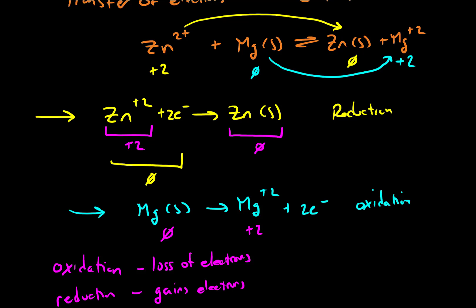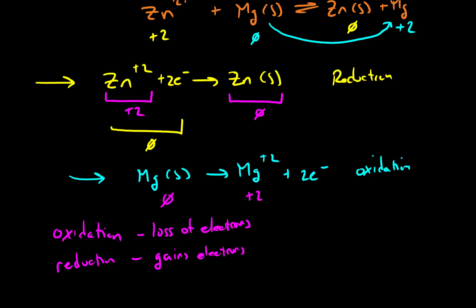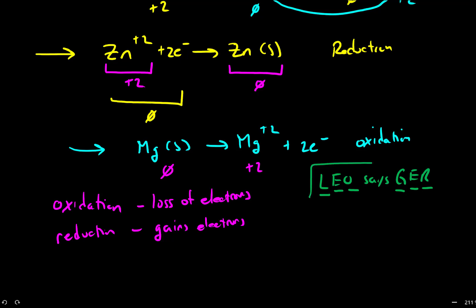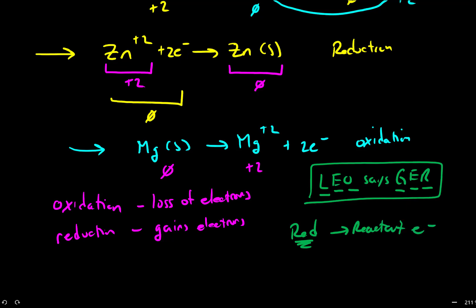Oftentimes you need to break it down into explicit half reactions to determine what's being oxidized and what's being reduced. A couple of easy ways to remember the terms: one is the acronym LEO says GER — Loss of Electrons is Oxidation, Gaining Electrons is Reduction. Another easy way to remember is that in a reduction reaction, electrons are reactants — when electrons are reactants, it's a reduction.